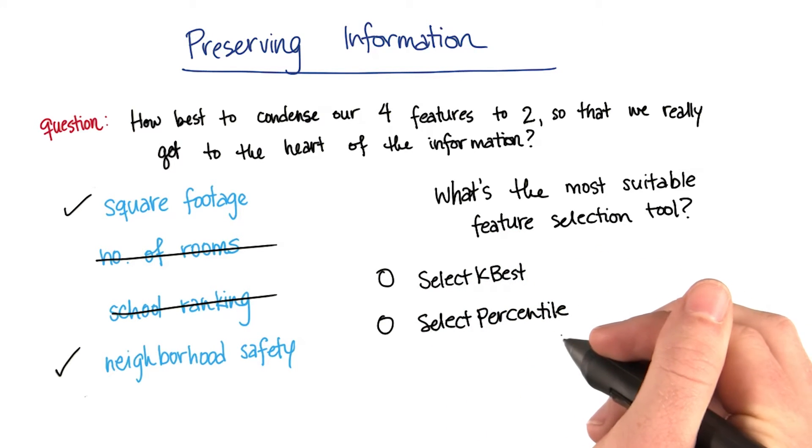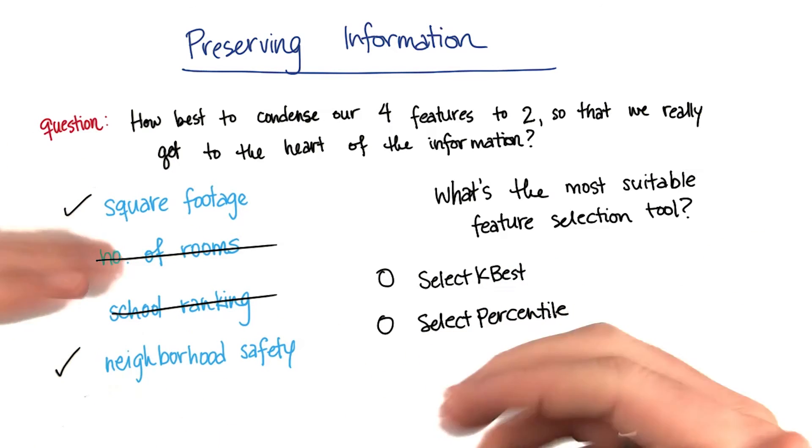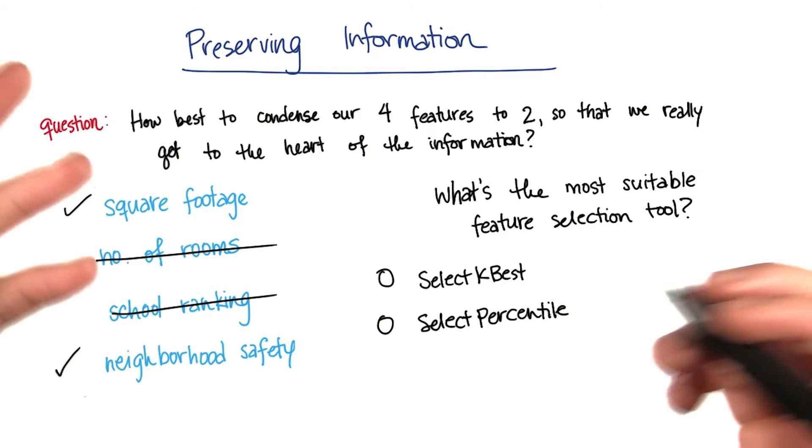Select percentile, you're already familiar with. It just selects the top x% where you're allowed to specify the percentage of features that you want to keep.